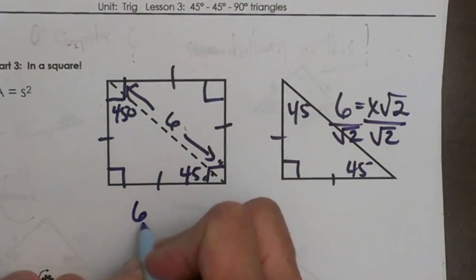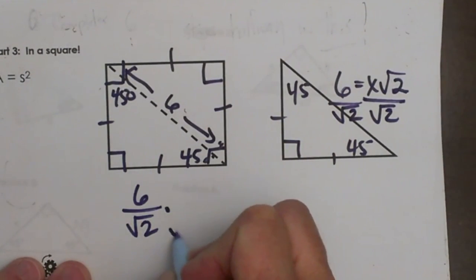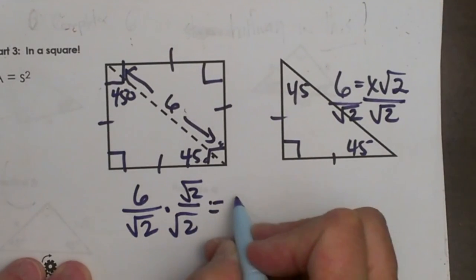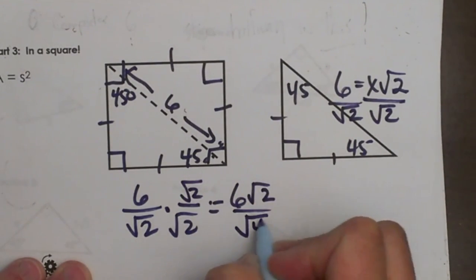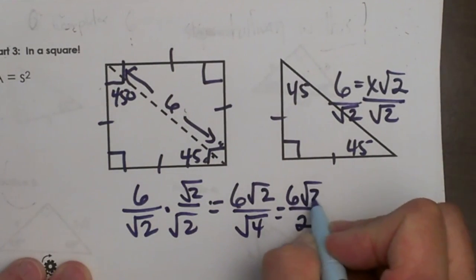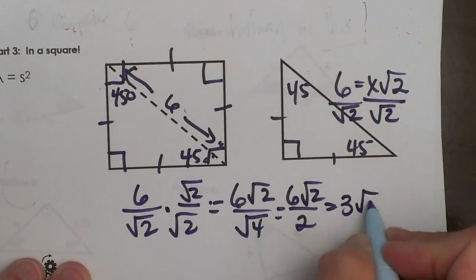How do we handle dividing that? We have to rationalize the denominator in other words multiply by √2 over √2 and that gives us 6√2 over √4 and the square root of 4 is 2. So that is 6√2 over 2 which reduces to 3√2.